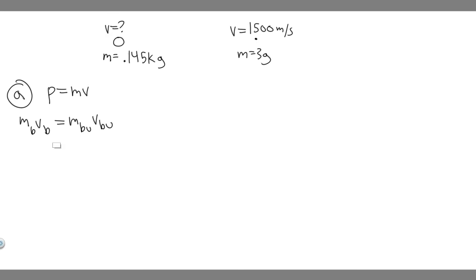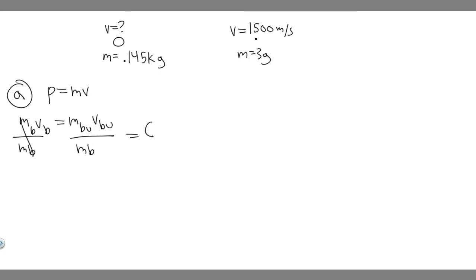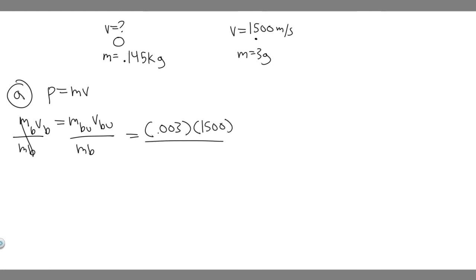So we want to solve for the velocity of the ball. If we divide both sides by the mass of the ball, the velocity of the ball equals the mass of the bullet times the velocity of the bullet divided by the mass of the ball. The mass of the bullet is 3 grams, but we need it in kilograms — there are 1,000 grams per kilogram, so 3 grams equals 0.003 kilograms. That gives us 0.003 times 1,500 divided by 0.145.